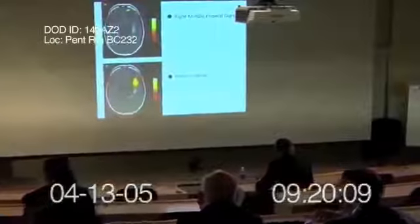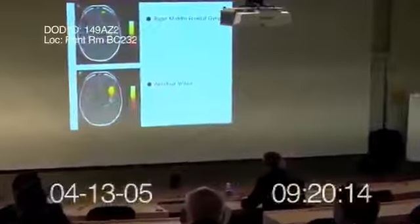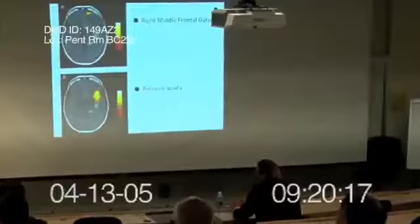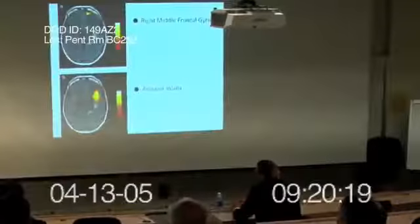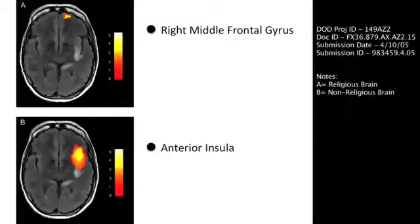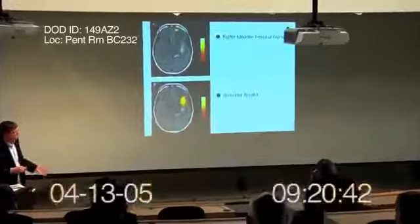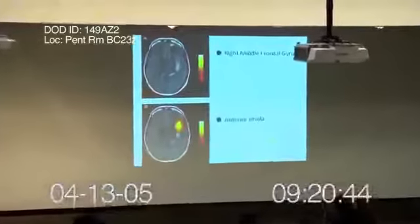We have some very remarkable data in this next slide. Here we have two brain scans — these are fMRIs of two different individuals with different levels of expression of VMAT2. On top is an individual who's a religious fanatic and has high levels of VMAT2, repeated numerous times. This individual down here had low levels of the VMAT2 gene.